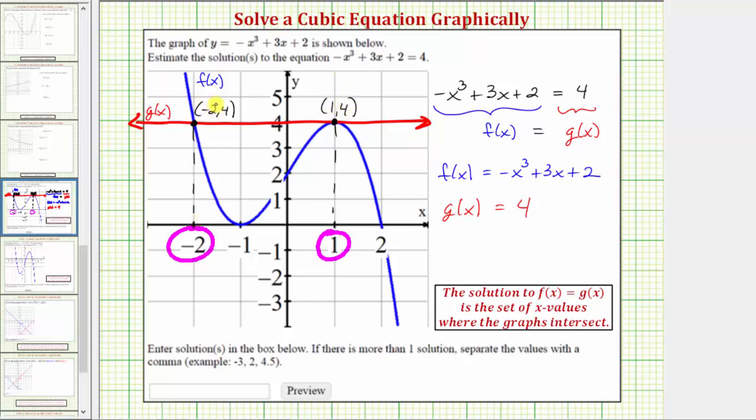Notice when x equals negative two, both f of x and g of x equal four. And when x equals one, again, both f of x and g of x equal four.